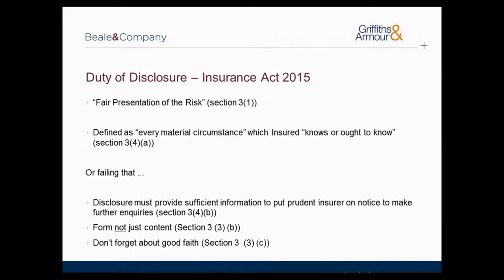The principal aim of the Insurance Act 2015 is to address the balance between insurers and business insureds when it comes to the disclosure of information relevant to an insurer's assessment of risk. As such, the Insurance Act replaces the old duty of disclosure with a new obligation to make a fair presentation of risk. The obligation seeks to promote the disclosure of information as a cooperative exercise between insurers and insureds. The insured will know the specific information relevant to how their business is run, and the insurer will know which of that information is relevant to their assessment of risk.